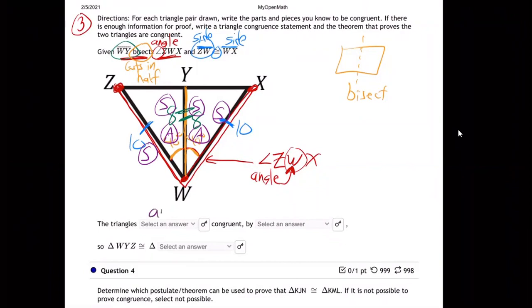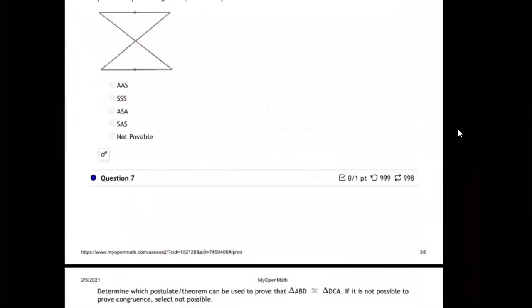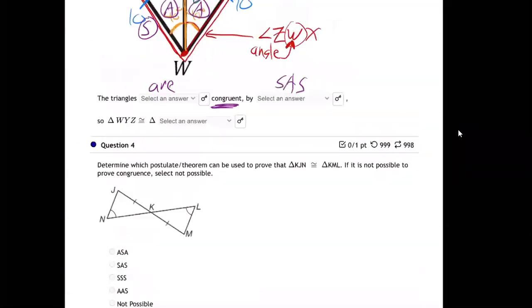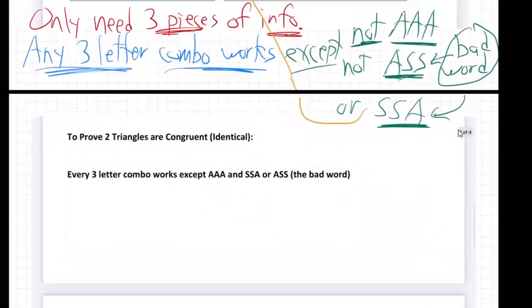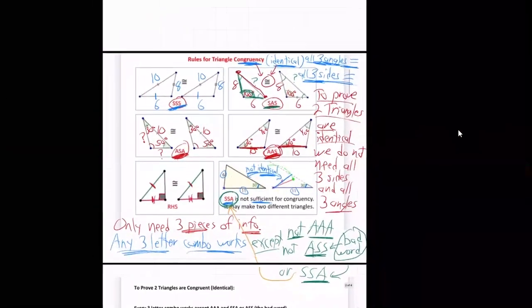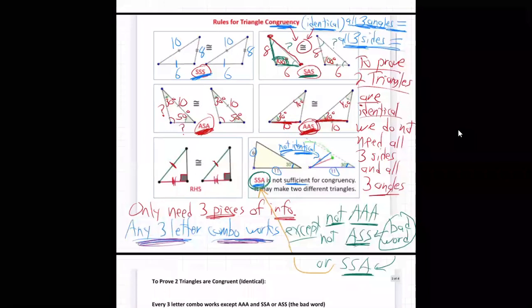So the triangles are congruent, identical by side, angle, side. Remember, any three-letter combo works. All three-letter combos work. As I gave you down here in the notes, whoops, right up here. Here it is. Every, any three-letter combo works except AAA and the bad word, forward or backwards. All the other ones work.